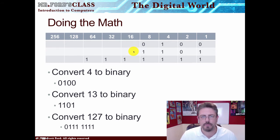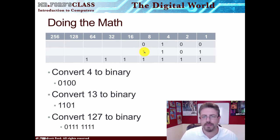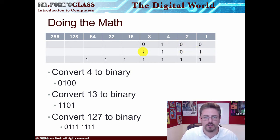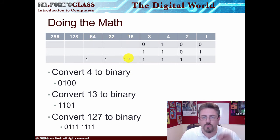How about 13? Can 16 go into 13? Nope. Can 8 go into 13? Yes. With whatever's left over, can 4 go into that? Yes. Can 2 go into it? No. Can 1 go into it? Yes. So we're putting these numbers in for everyone that can go in there — that's how we do the math.